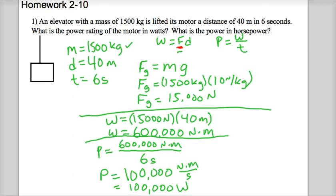And now, the problem itself said that we should have the answer also in horsepower. So, to get that answer, we know that there's 700 watts equals 1 horsepower.